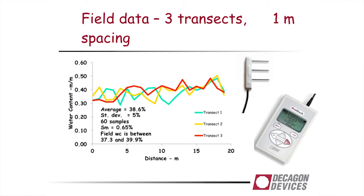That usually is discouraging when we see how many samples are needed. But quite often the thing we need to know is not an accurate value for the average water content — quite often what we want to know is how much the water content is changing. And that we can know in other ways accurately enough so that we don't need that many samples. That person wanting to schedule irrigation would need to know water content with a precision of 1% or better, but that could be achieved much more readily by installing a sensor in situ, where you're not dealing with the spatial variability in the soil.